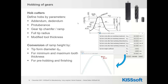Let us have a look at hob cutters. Hob cutters are defined by addendum and dedendum. They can include protuberance, they can include a ramp angle which will finally create a gear tip chamfer, a full tip radius or any radius at the tip. And they can have a modified tool thickness so that you can simply type in the number into the KISSoft user interface and input standard tool data as quickly as possible.